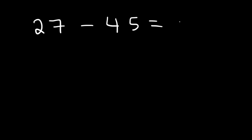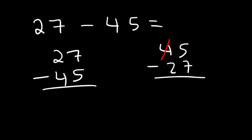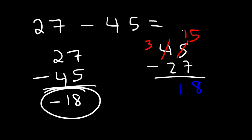What about this example: 27 minus 45? Notice that 45 is larger than 27, so the answer has to be negative. Therefore, reverse it — compute 45 minus 27, get a positive answer, then make the final answer negative. 4 minus 5 won't work, so we borrow a 1, making it 15. 15 minus 7 is 8, and 3 minus 2 is 1. So 45 minus 27 is 18, meaning 27 minus 45 is negative 18.